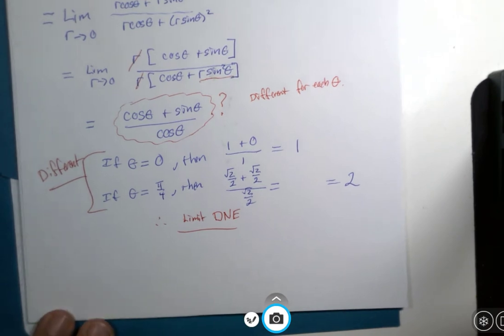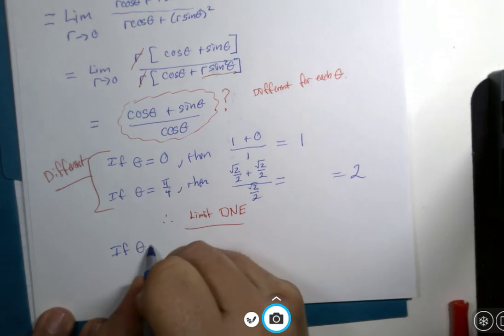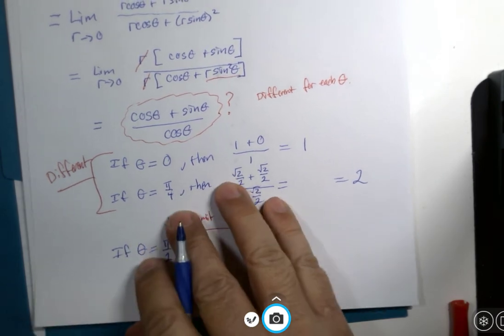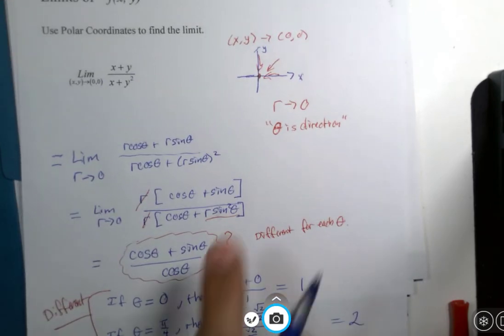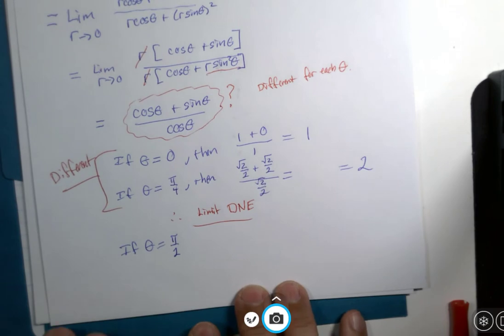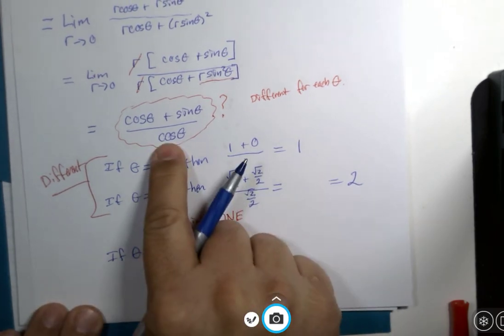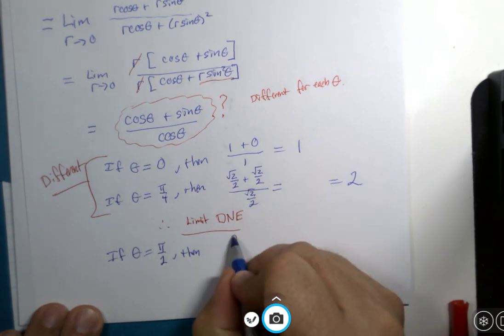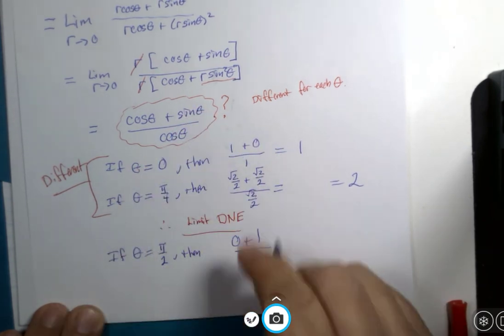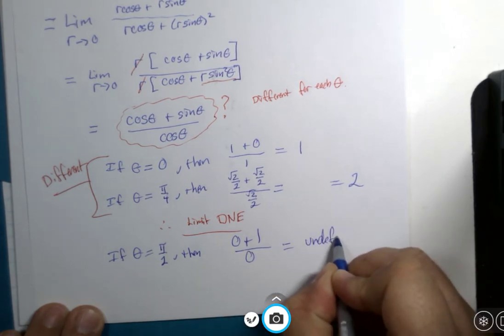Allow me to do one more little demonstration. If theta is pi over 2, and we are approaching the origin from the y-axis, then this cosine of pi over 2 is 0, sine of pi over 2 is 1, cosine of pi over 2 is 0. So this was undefined.